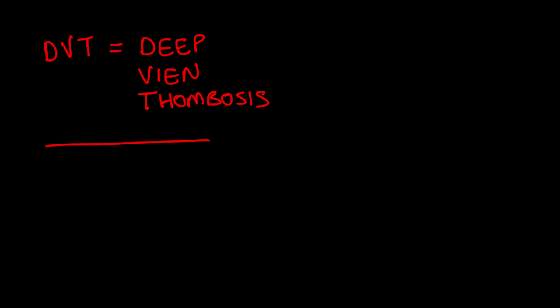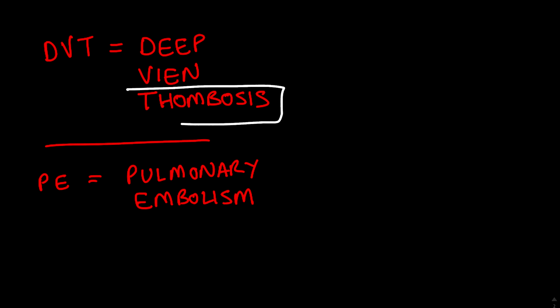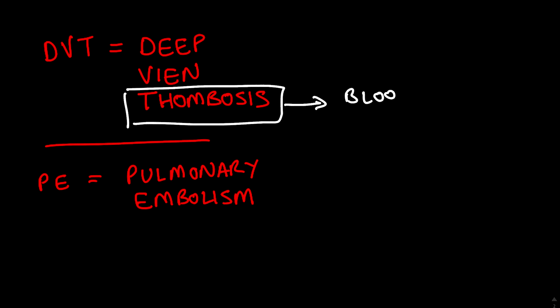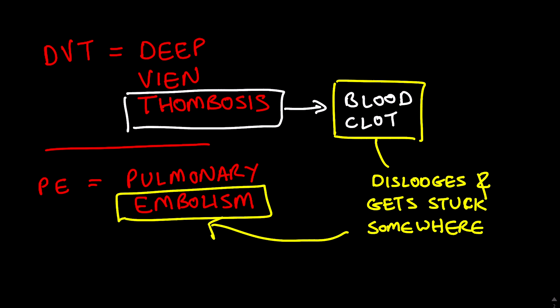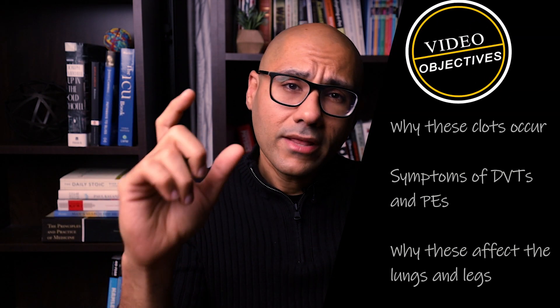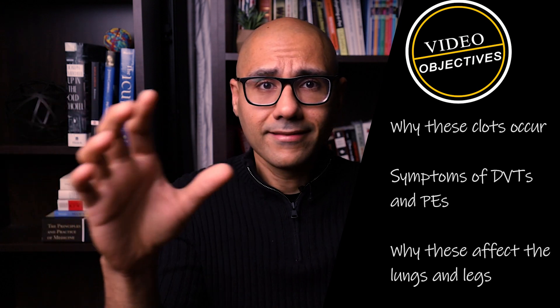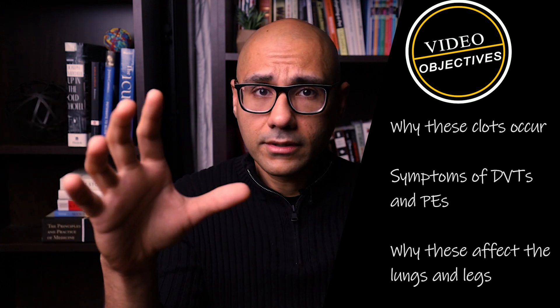DVT stands for deep vein thrombosis and PE stands for pulmonary embolism. A thrombosis is what we call a blood clot, and when that blood clot dislodges and moves around the body and gets stuck somewhere, that is called an embolism. By the end of this video, you'll understand why these clots happen, what the symptoms are, and why these two locations — the legs and the lungs — are singled out as common sites of clot formation.